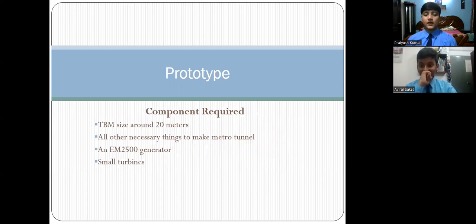The components required are TBM size around 20 meters, all other necessary things to make a metro tunnel, and EM2500 generator, small turbines.